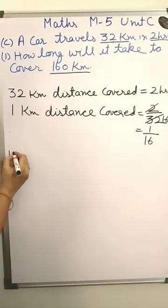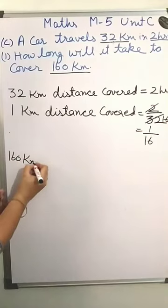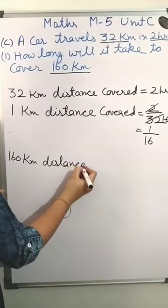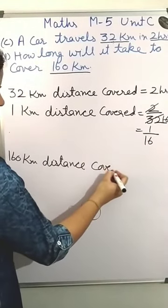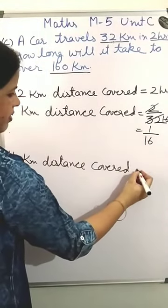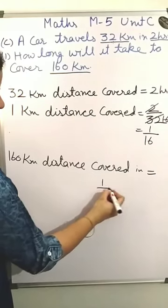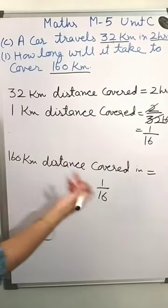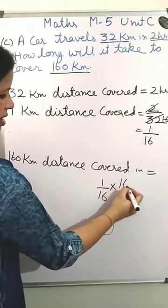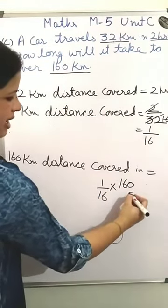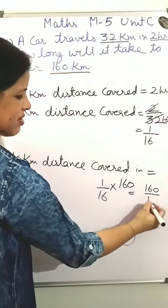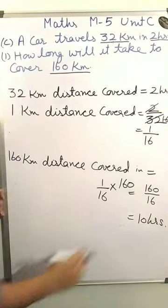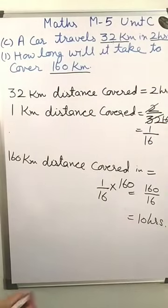And now for 160 km distance covered — we are calculating value of many, so we multiply. It becomes 160 upon 16, and it is 10 hours. The answer is 10 hours. This is the answer.